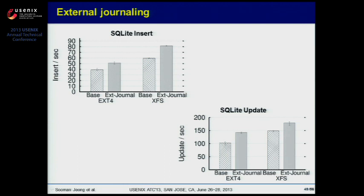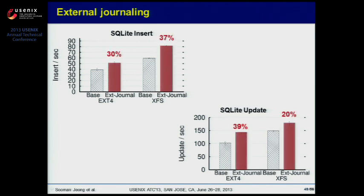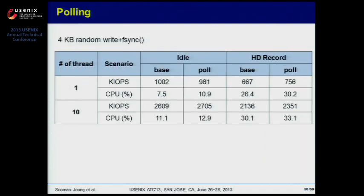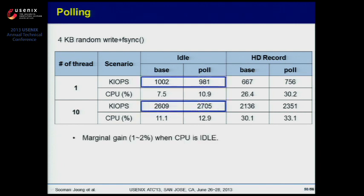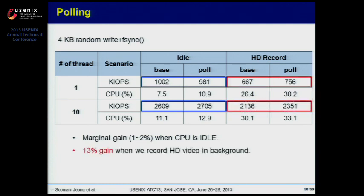Next, we compared the effect of external journaling on EXT4 and XFS. For this experiment, we separately save data on the external SD card and journal on the internal eMMC. Both for SQLite insert and update operations, it showed 20 to 39% performance increase compared to baseline. The comparison between interrupt and polling methods, with a workload of 4KB random write followed by fsync, showed that the idle condition gives slight performance increase, but the video recording condition showed 13% performance increase compared to baseline.